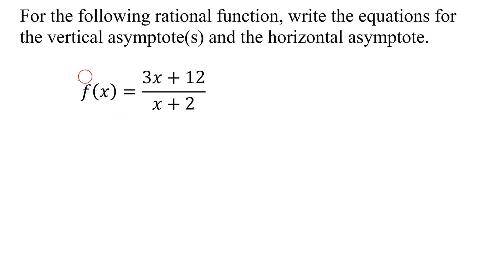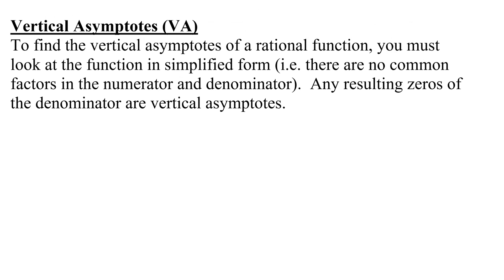Here is our function, and we need to review how to find vertical asymptotes. To find vertical asymptotes of a rational function, you must look at the function in simplified form. That means there are no common factors in the numerator and the denominator. Then any resulting zeros of the denominator are your vertical asymptotes.